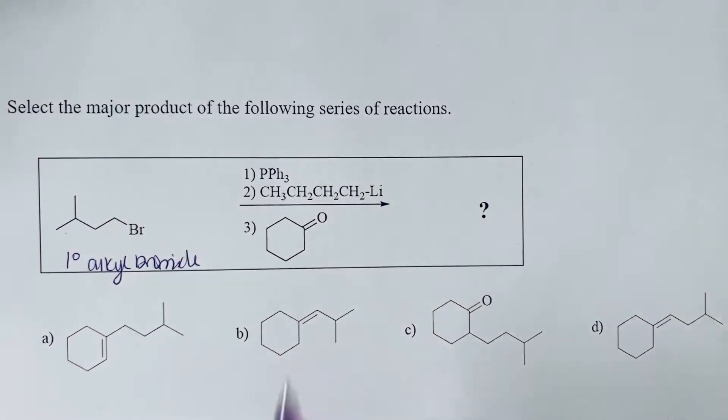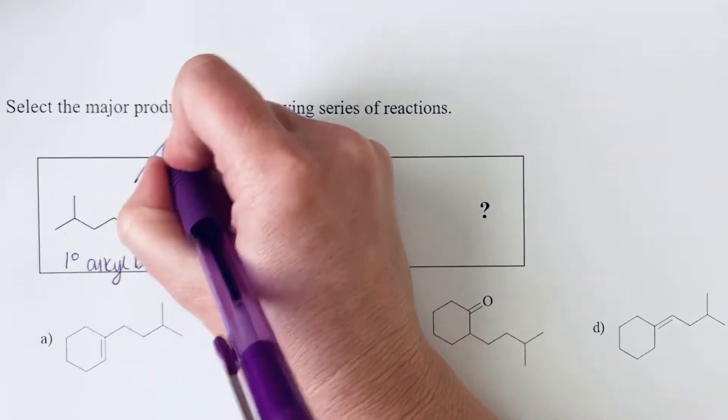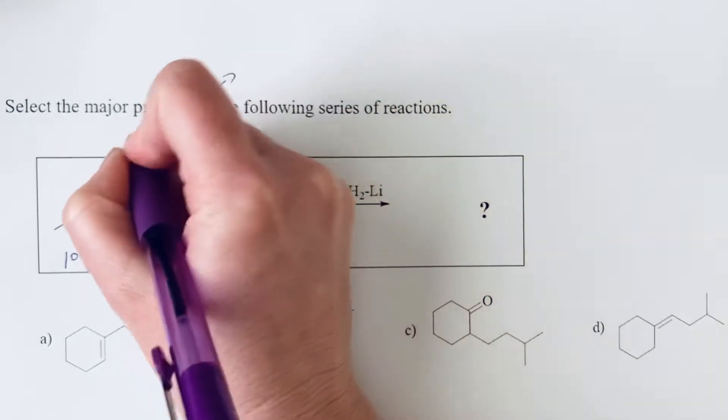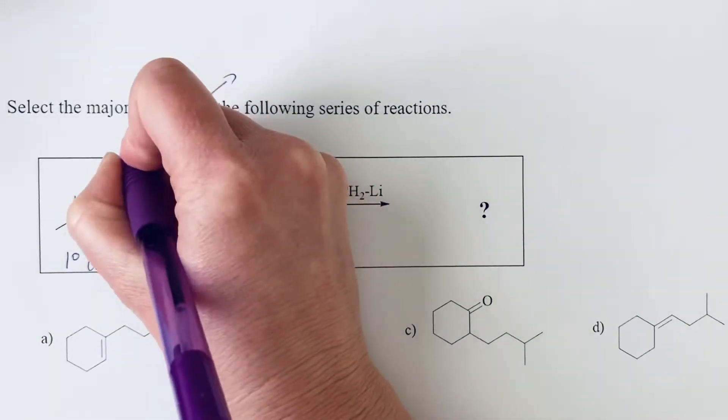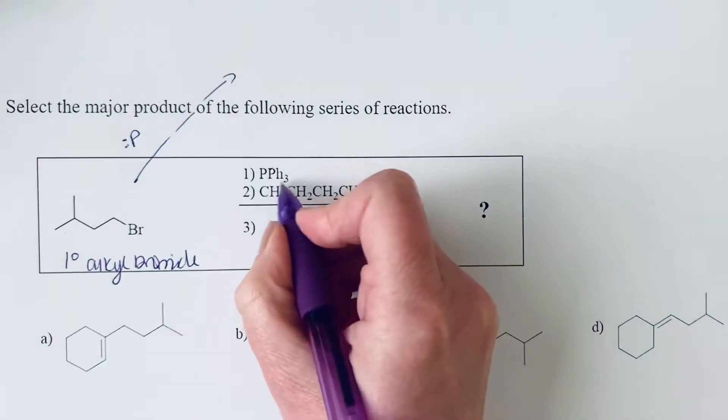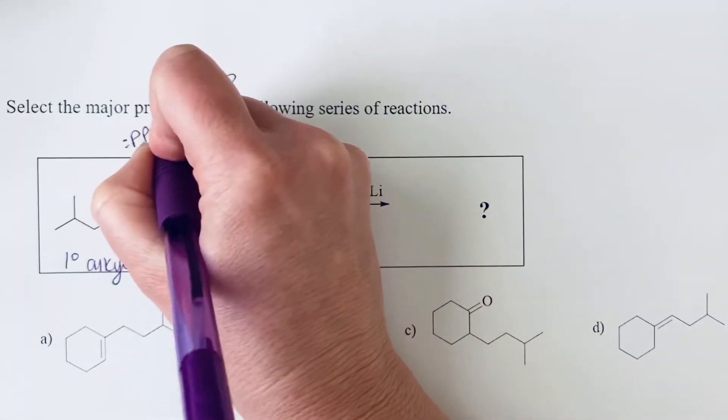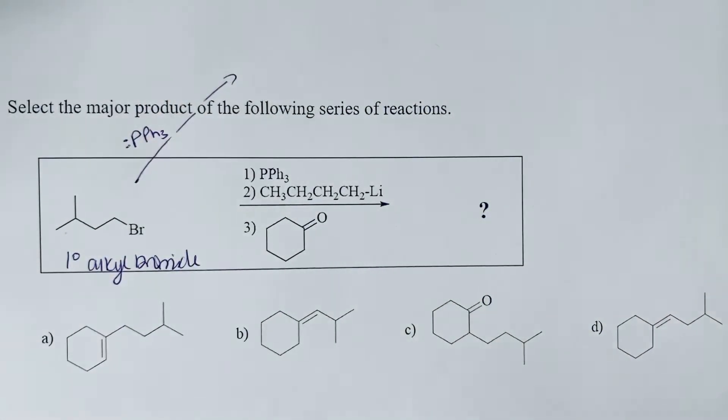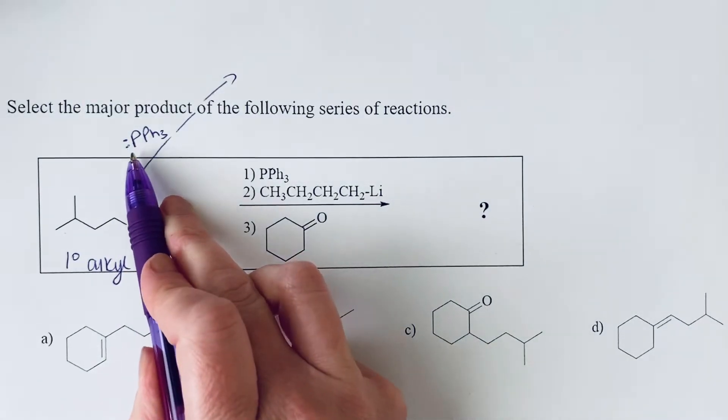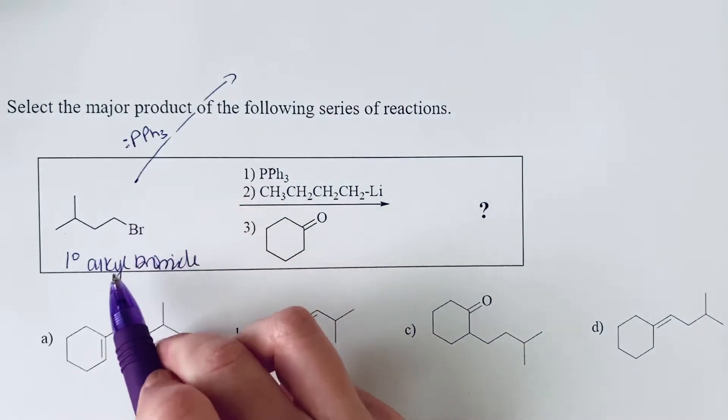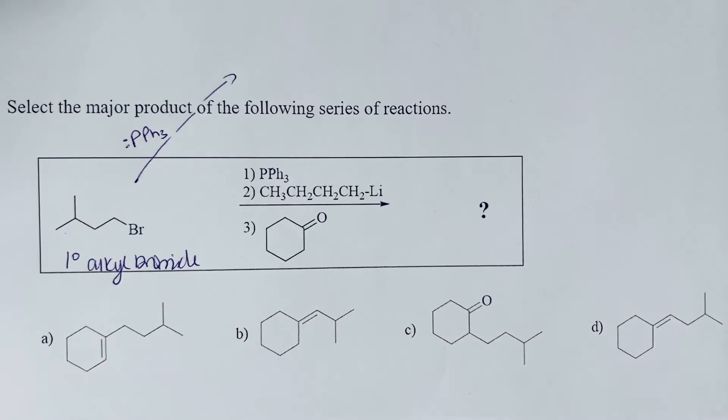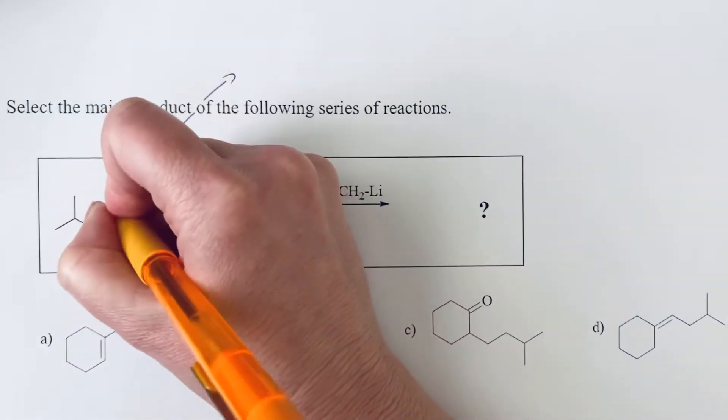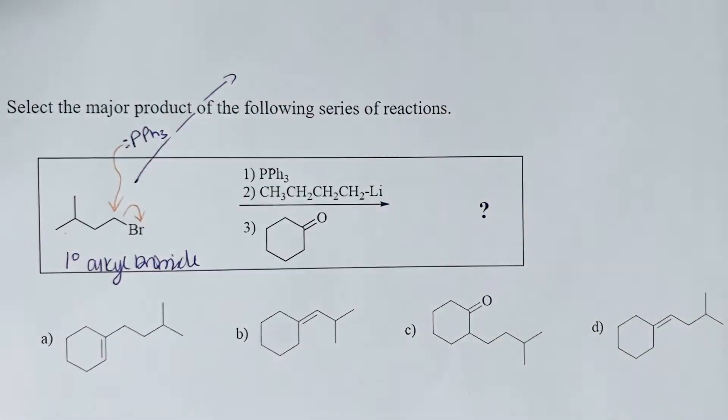What we're reacting this with in the first step is triphenylphosphine. Your phosphorus has a lone pair of electrons and those are three benzene rings. But with this lone pair of electrons, it's a good nucleophile and it can do an SN2 attack on a primary alkyl halide. So we can do that SN2 substitution.